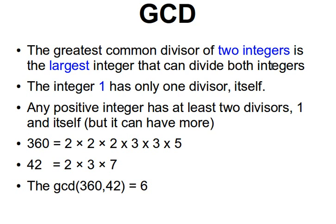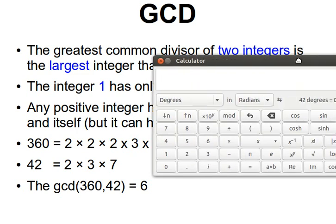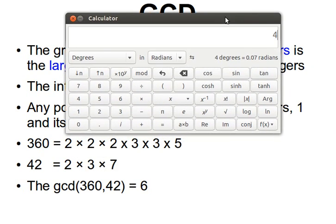Any positive integer has at least two divisors — 1 and itself — but can have more. For example, if we factorize the number 360, we find it's the result of 2 × 2 × 2 × 3 × 3 × 3 × 5. To demonstrate: 2 × 2 × 2 × 3 × 3 × 5 gives us 360. Then the number 42 is 2 × 3 × 7, and we get 42.